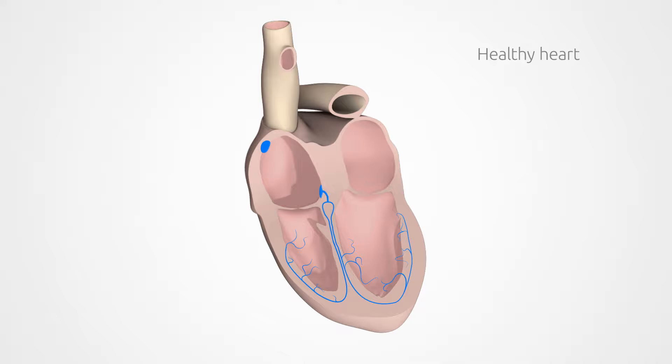A healthy heart beats in time to its main pacemaker, the sinus node in the right atrium. At rest, it sends 60 to 80 electrical signals per minute, which spread across both atria.